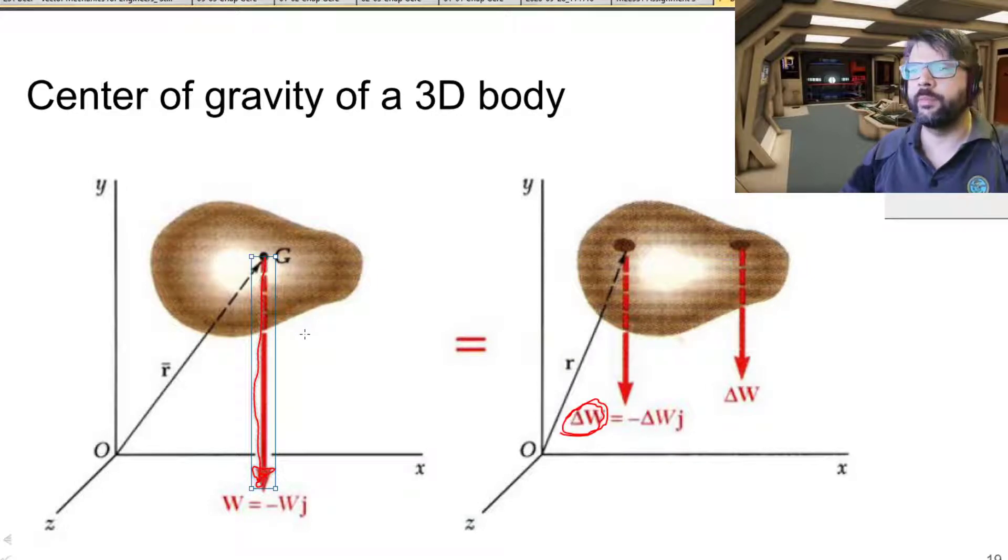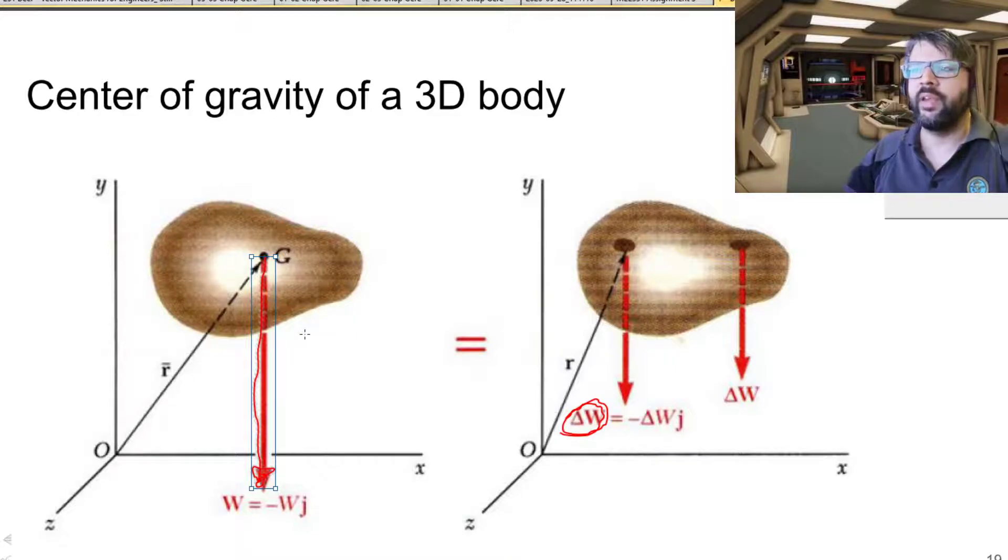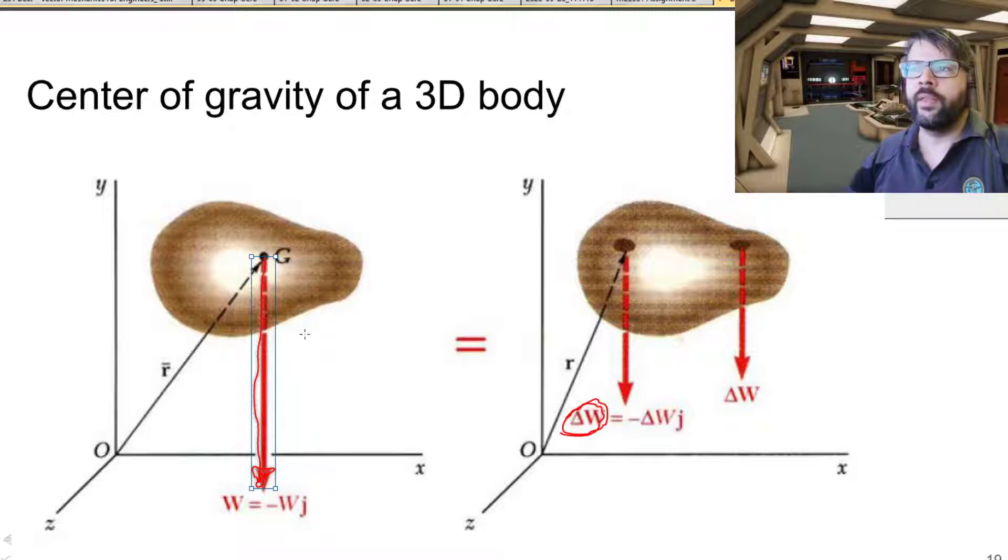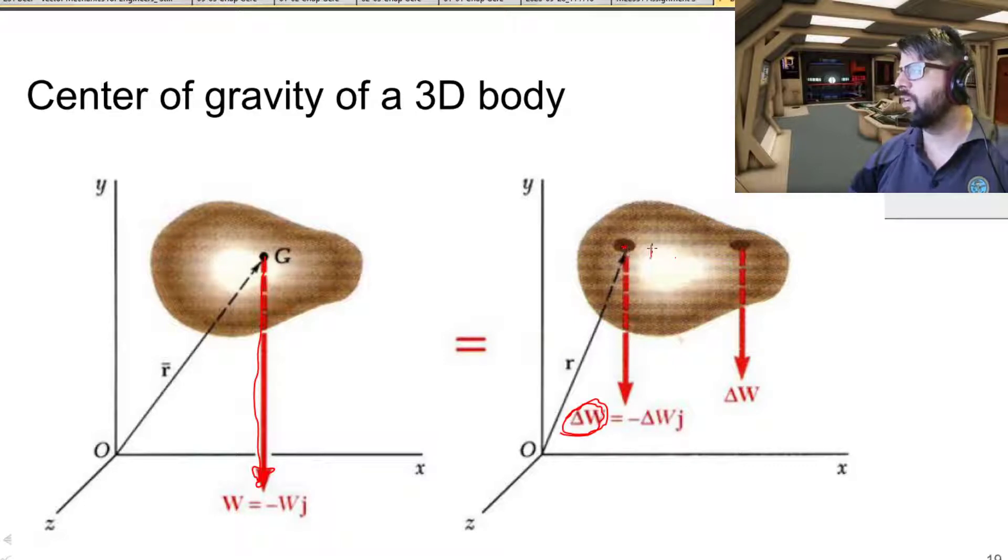Those are going to be equivalent, so if it passes through the center of gravity, then taking the moment of this weight about any point will result in the exact same moment as if you took the moments of each of these individual little particles that make up the body about the same point.